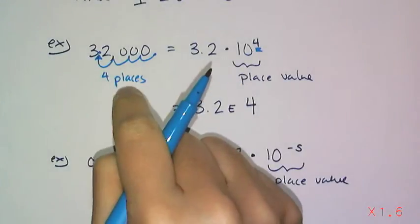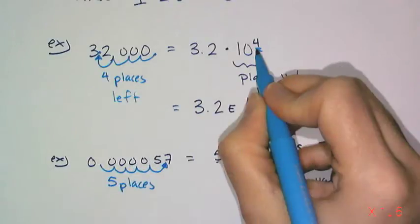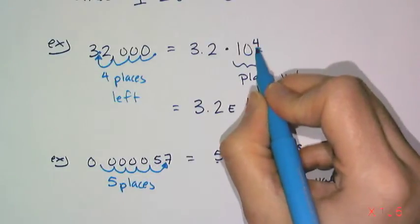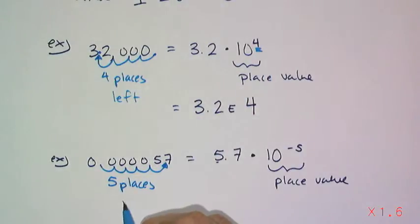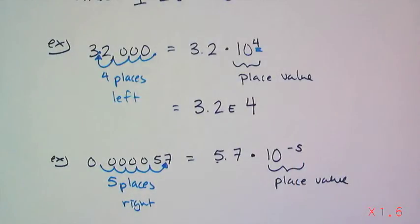Now since I moved these 4 to the left, that means I'm adding to the exponent. And since I moved it to the right here, that means I'm subtracting from the exponent.